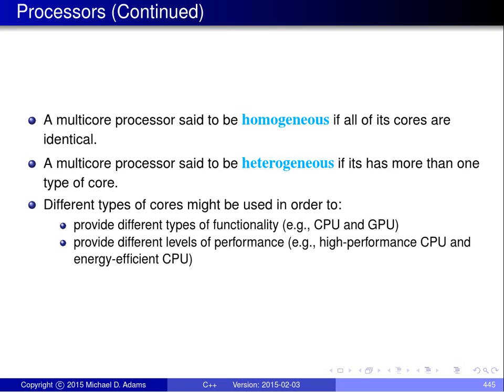If a multicore processor has all cores of the same type, we say it's homogeneous. If it has more than one type of core, we say it's heterogeneous. One reason for having different types of cores is to provide different types of functionality — for example, a CPU core for general-purpose computing and a GPU core for hardware-accelerated graphics.